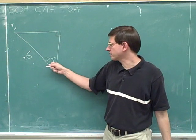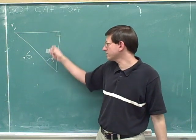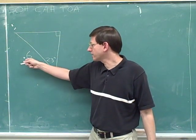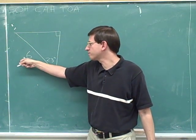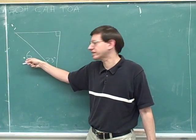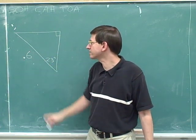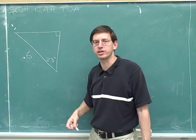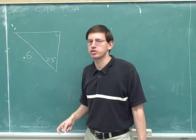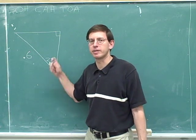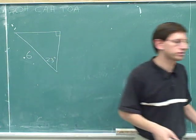Here's another problem. This angle is 23 degrees. This is a right triangle, and the length of this side is 0.6. Please pause the video and try to figure out everything else that you can about this triangle.